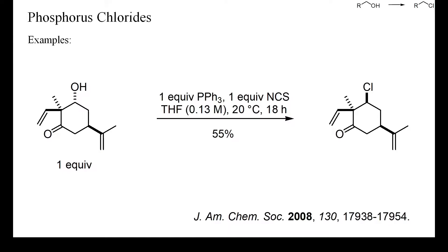In this example, the starting alcohol was a neopentyl-type, non-activated alcohol. These are difficult to convert into chlorides, but with N-chlorosuccinimide and triphenylphosphine, the deoxychlorination proceeded under notably mild reaction conditions and with inversion of configuration. No chlorination of the olefin was observed.